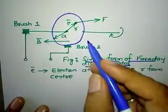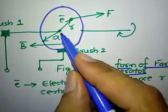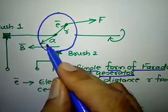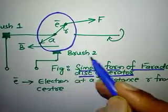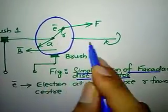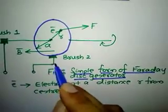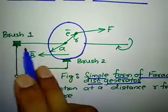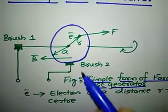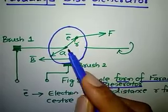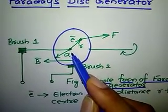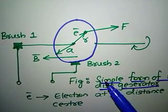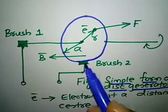This is a rotating disk with its center at this point and its radius being 'a'. The field B-bar is acting along the axis of the disk. There are two brushes: one brush is located on the rim of the disk and another brush is located along the axis to collect the current. The electron is located at a distance of r from the center.